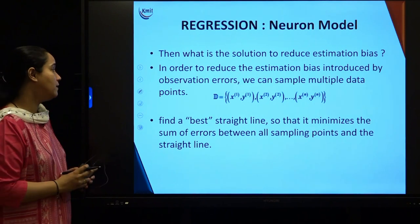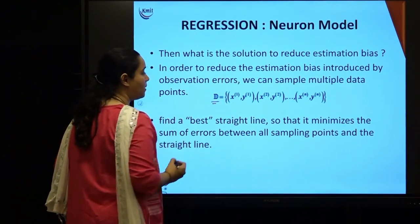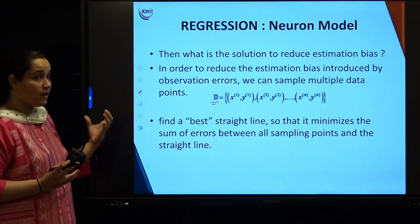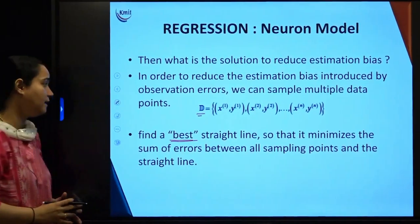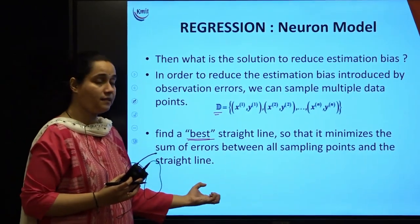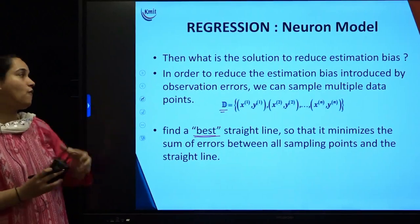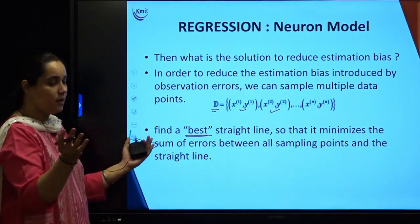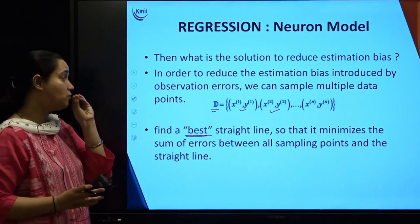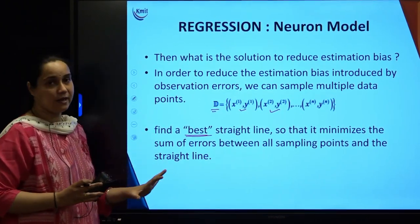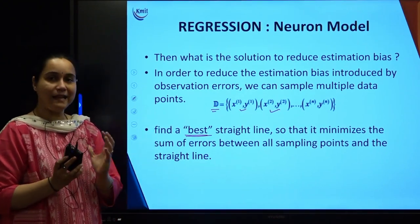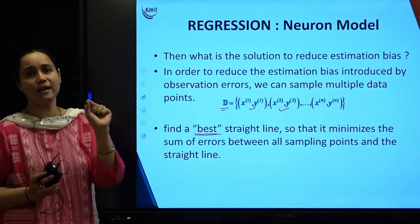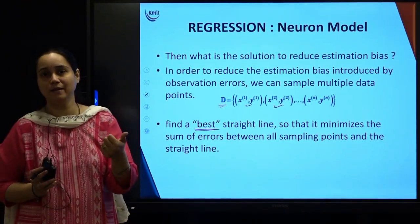I am now taking a set of data points which I am calling D, with n number of multiple data points. If I really want to find out the best straight line, I should consider so many points such that it minimizes the sum of observational errors — each point introduces one observational error. The best fit line will be that line which reduces the sum of these observational errors, and using that, the found weight and bias will be the best estimated weight and bias.